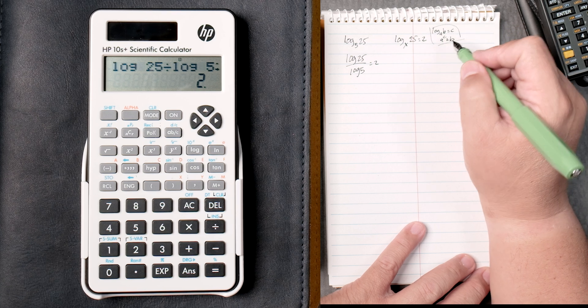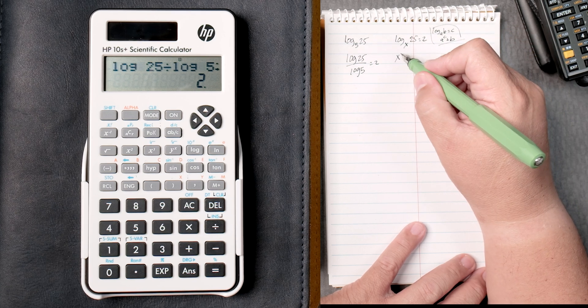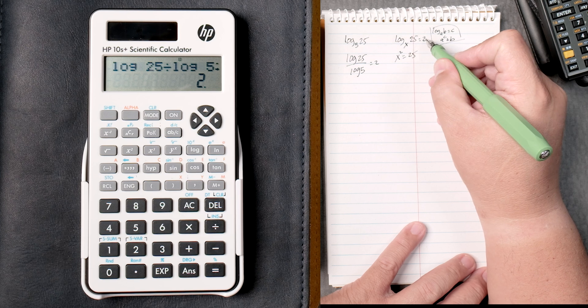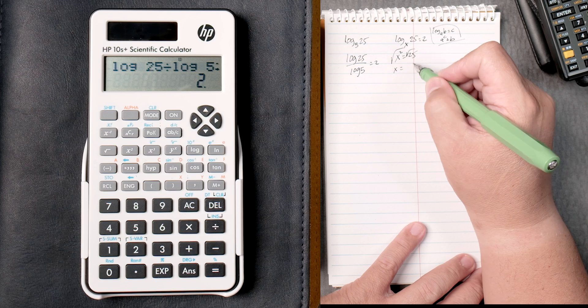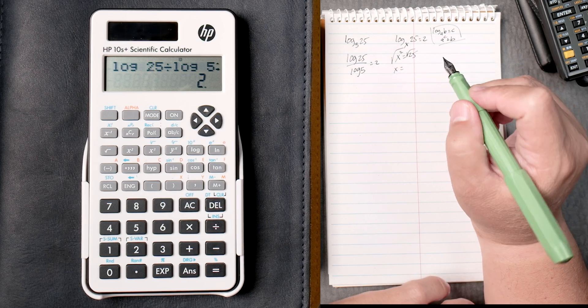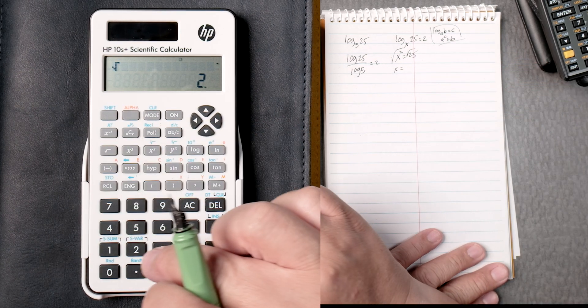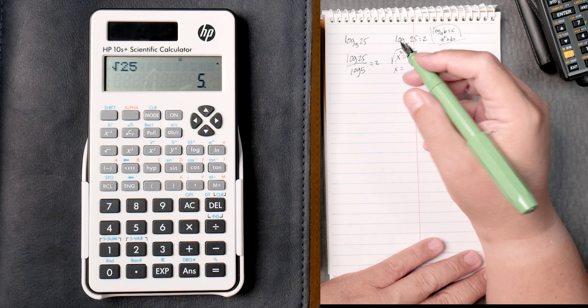You can rearrange it. So this you can rearrange to x squared equals 25. Take the square root on both sides. That gives you x equals square root of 25. So we take the square root, type in 25, click equals. It gives you 5.